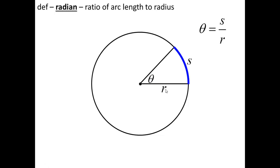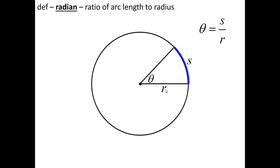So as long as the angle remains the same, the ratio between the arc length and the radius remains the same. Instead of basing an angle on how many 1/360ths of a unit you turn around, the measure of the angle is based on the distance around the circle that you travel. The bigger the circle, the bigger the radius, the bigger the arc length, yet the ratio would always stay the same. Here is 1 radian — I know this is 1 radian because both the radius and the arc length are equal, so a/a equals 1 radian.